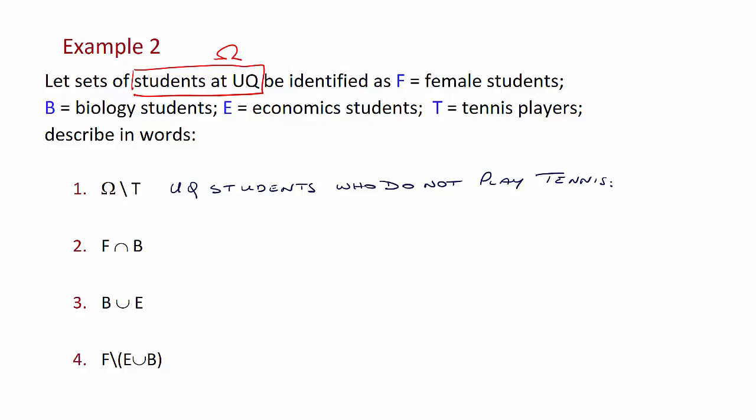Our second case we've got F intersection B, or F and B. F is female students, B is biology students. So we have female students and biology students. Or we might say female UQ students who study biology.